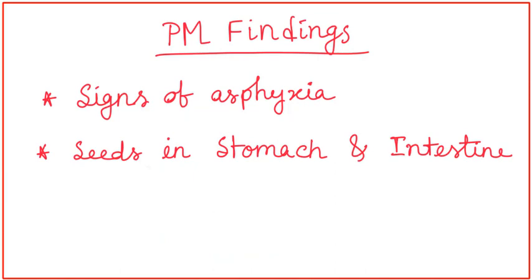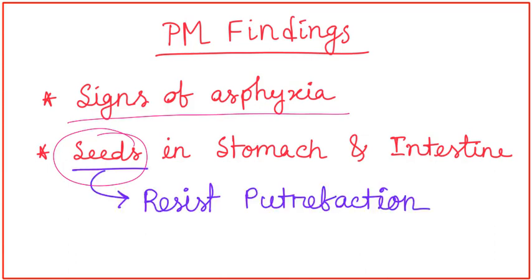The post-mortem findings are not actually characteristic. But as death occurs from respiratory failure, signs of asphyxia will be present. And internally, seeds of Dhatura may be found in stomach and intestine. And these seeds resist putrefaction for a long time.